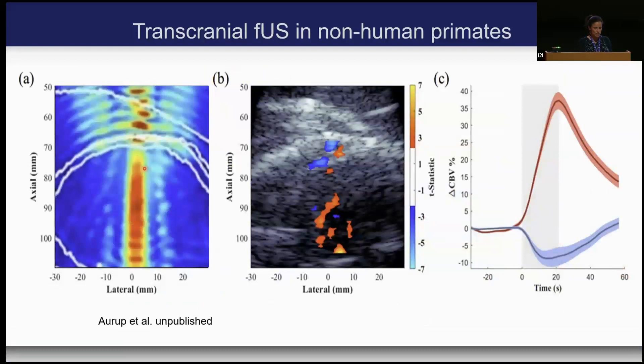We can see regions of blood flow changes — both increases and decreases — potentially interrupted by white matter tracks. We're trying to determine whether we see the blood-stealing effect well known in fMRI, where the brain borrows blood from one region to respond to a stimulus, then both regions return to normal. This is for brain stimulation.